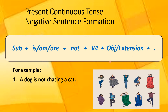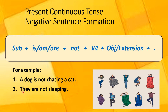Look at the first example. Your affirmative sentence was: a dog is chasing a cat. Your negative sentence becomes: a dog is not chasing a cat. Your second affirmative sentence was: they are sleeping. Its negative form would be: they are not sleeping.